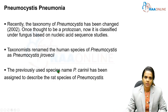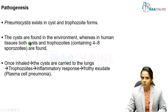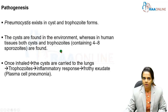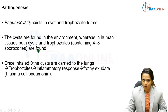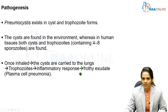Pneumocystis actually exists in two forms: cystiform and trophozoite forms. The cystiform is found in the environment, whereas in human tissues both the cystiform and trophozoite forms are present. The trophozoite usually contains four to eight sporozoites within it. Once inhaled, the cysts are carried to the lungs where they transform into the trophozoite stage. These trophozoites induce an inflammatory response, resulting in the recruitment of inflammatory cells like plasma cells, resulting in frothy exudate. Hence it is also termed plasma cell pneumonia.